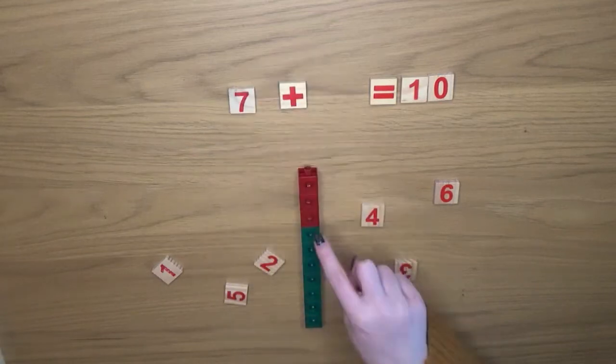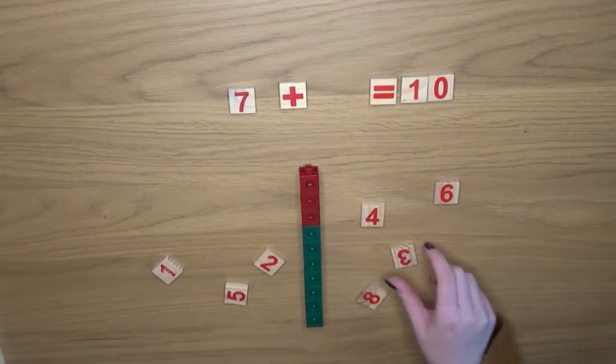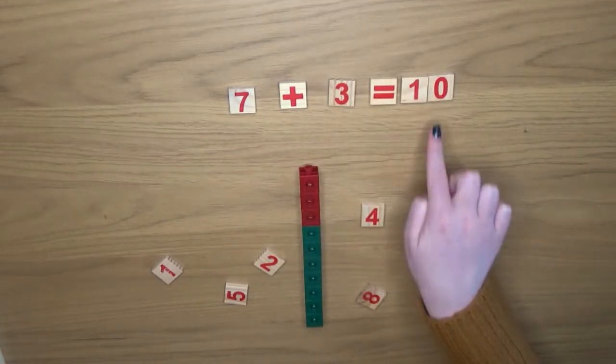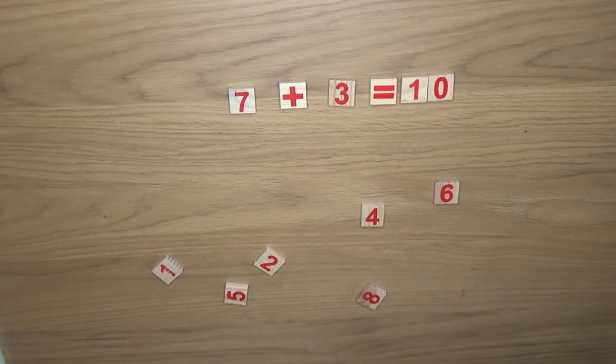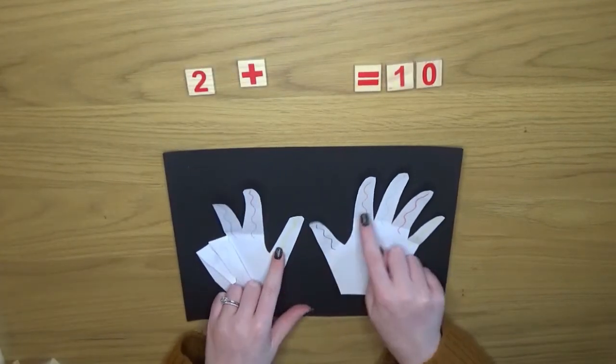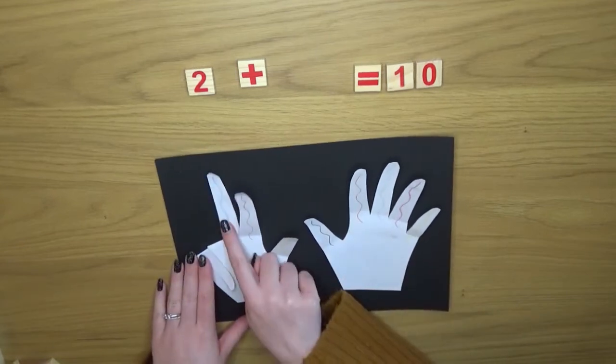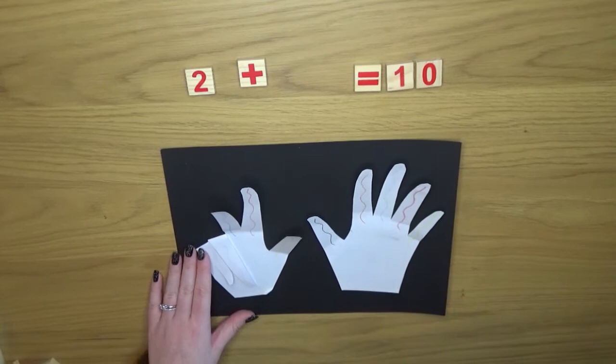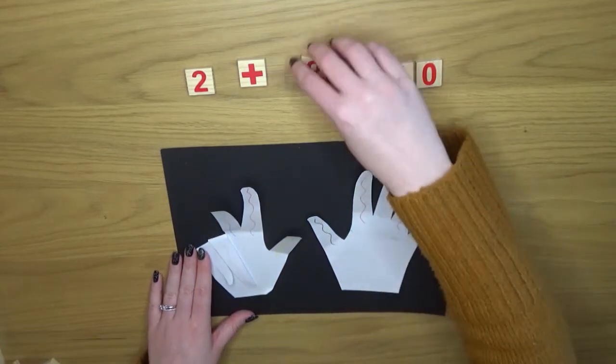Of course it's also important to discuss what the different symbols mean like the addition sign and the equal sign. So for example here you can see we've returned to our handy counting hands and we've added numerals in so now we're building a number sentence as well as using the resource that we made earlier.